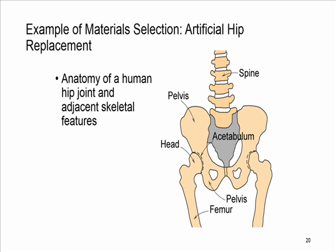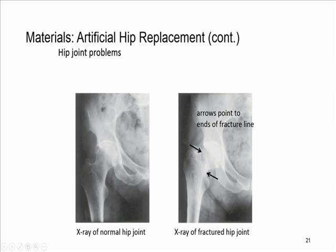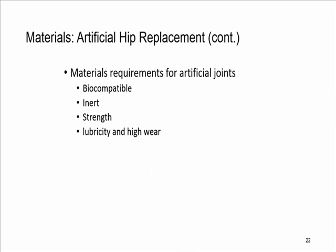Now we see how knowledge of materials helps material selection in replacing a hip. First we need to know a bit about the anatomy of the part. Here you see the anatomy of a human hip — a hip joint and adjacent skeletal features. The upper part of the leg is called the femur and is connected to the pelvis through the head; this joint is called the acetabulum. If the head of the femur is cracked, as shown in this x-ray image, this results in pain and disability. There is joint deterioration, loss of cartilage, and there might also be joint fracture. So how do we solve the problem? A hip joint can be replaced with an artificial one.